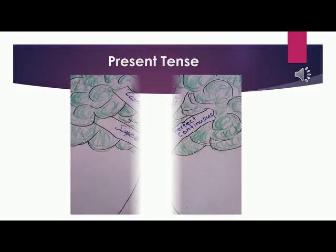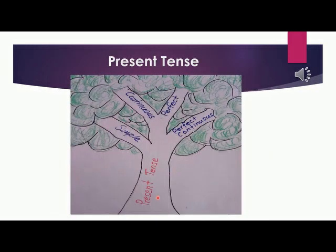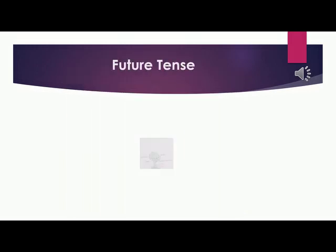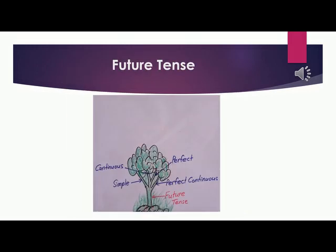Now, look at the present tense tree. It also has the same number of branches with the same names: simple, continuous, perfect and perfect continuous. Similarly, look at the future tense tree. It also has the four branches with the same names.